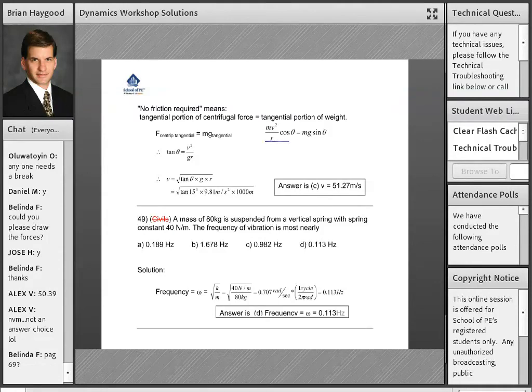So mv squared over r cosine theta equals mg sine theta. And we can find the velocity to be 52 meters per second. Or 51.3, rather.